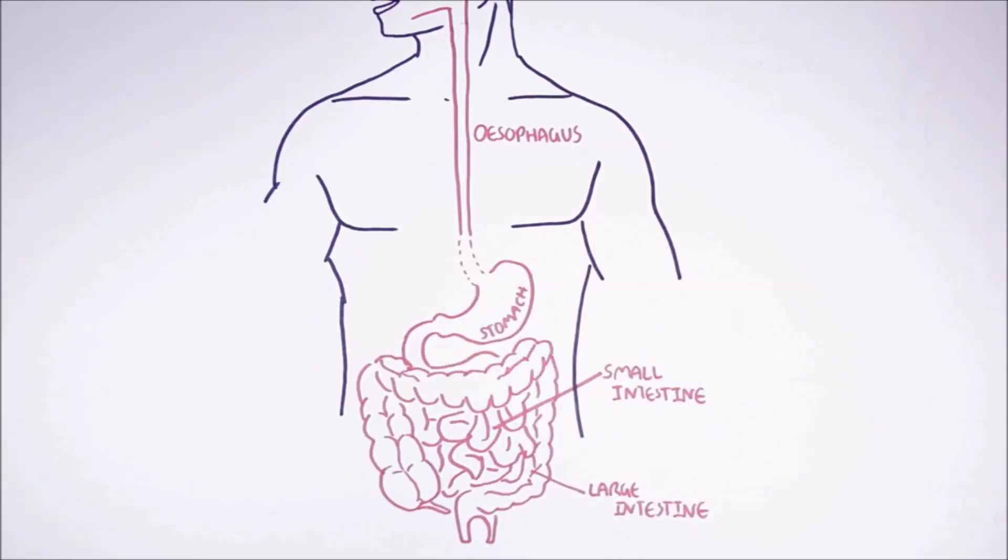Therefore, we can refer to the digestive tract as a long tube that runs from the mouth to the rectum. Food enters the mouth and leaves to the rectum.